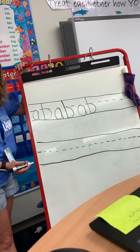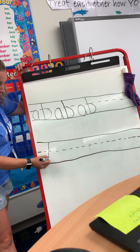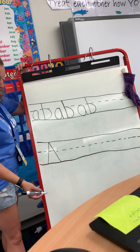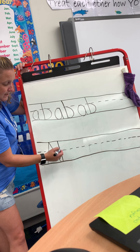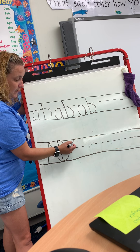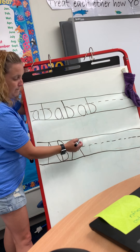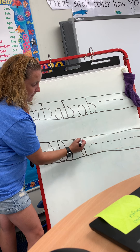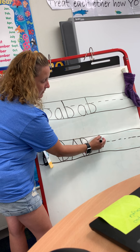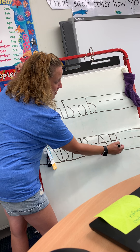Now we're going to do the uppercase A-B pattern. We're going to start at the top, diagonal down, back to the top, diagonal down, and cross. That is our uppercase A. Our B is first the bat, bump, bump. Back to our A: top, diagonal down, top, diagonal down, and across. And our B: start at the top, bat, bump, bump. And our A: diagonal down, diagonal down, cross it. And our B: bat, bump, bump.